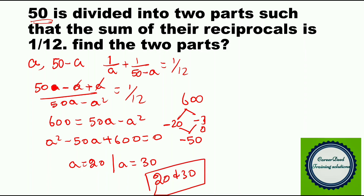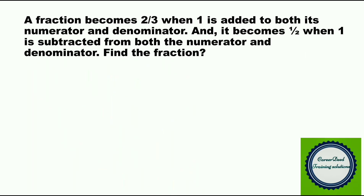If your answer is 20 and 30, then you are correct. Now moving to the last question of the session. A fraction becomes 2 by 3 when 1 is added to both its numerator and denominator, and it becomes 1 by 2 when 1 is subtracted from both numerator and denominator. Find the fraction. Your time is 45 seconds — pause the video, work it, and play it.